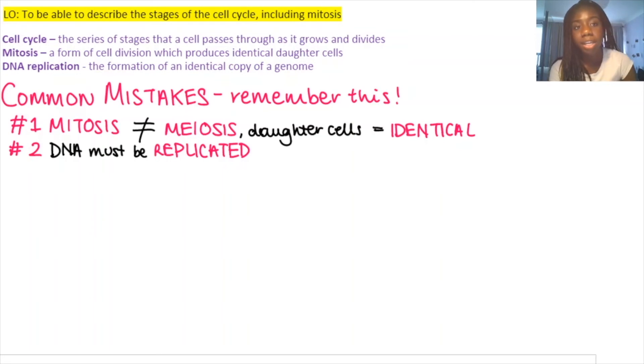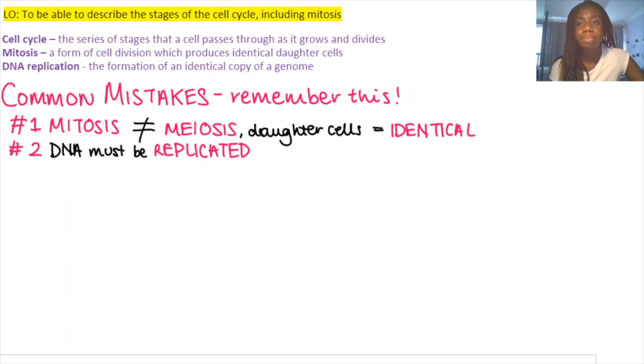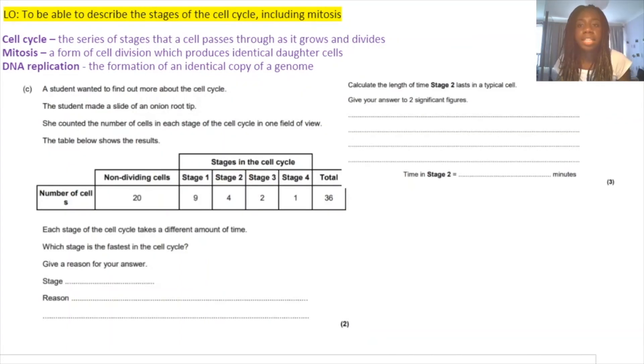The second common mistake is that DNA must be replicated before mitosis occurs, but this replication doesn't happen within the actual process of mitosis — it occurs in interphase, which is a separate part of the cell cycle.